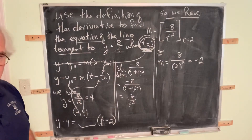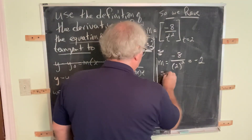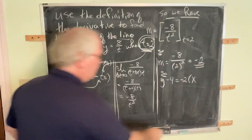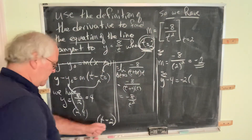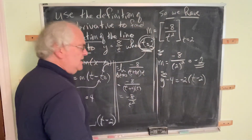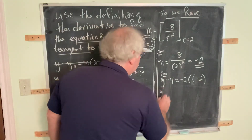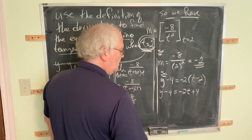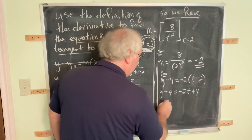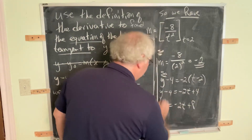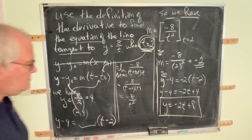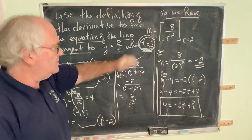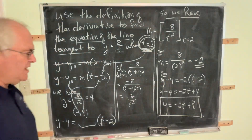That slope of negative 2 goes into our equation: y minus 4 equals negative 2 times (t minus 2). Distributing: y minus 4 equals negative 2t plus 4. Adding 4 across gives y equals negative 2t plus 8. So using the definition of the derivative, we found the equation of the line tangent to y equals 8/t when t equals 2: y equals negative 2t plus 8.